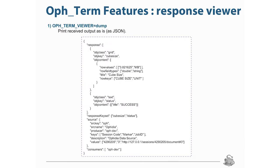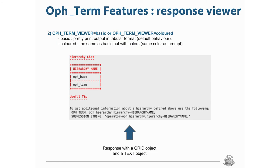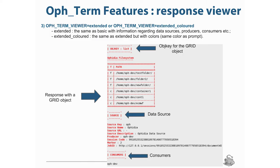Concerning the response, it comes in JSON format. You can use the environment variable OPH_TERM_VIEWER set to dump if you want to see this JSON on the screen. You can also set this variable to other values — for example, basic, which is the default, or colored, in order to see the output in a user-friendly, human-readable and manageable format. You can use extended or extended colored to see much more information extracted from the JSON.